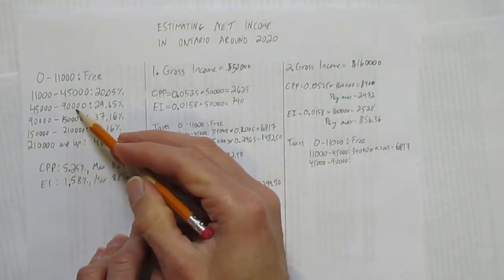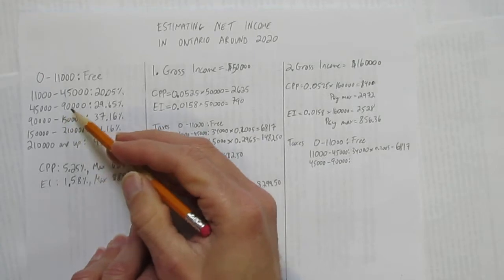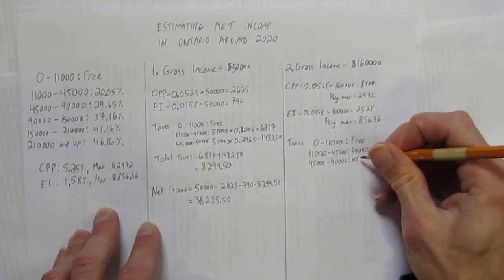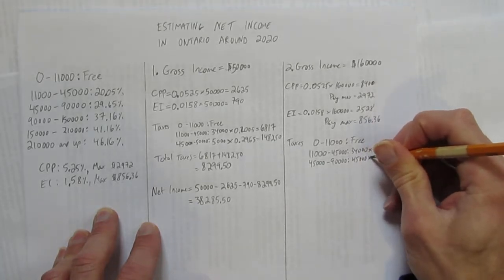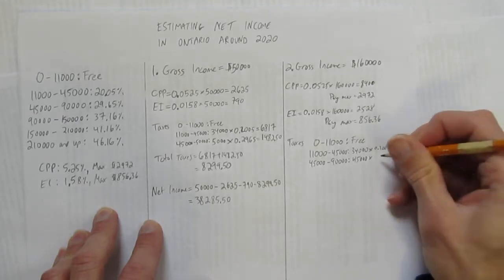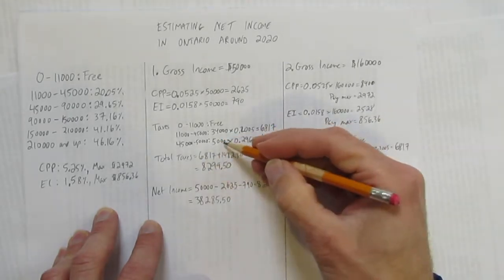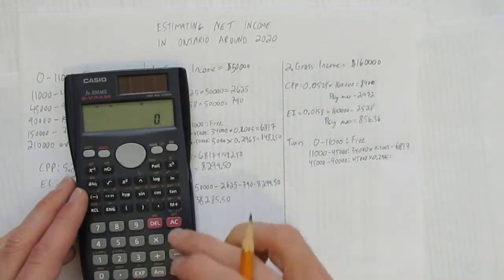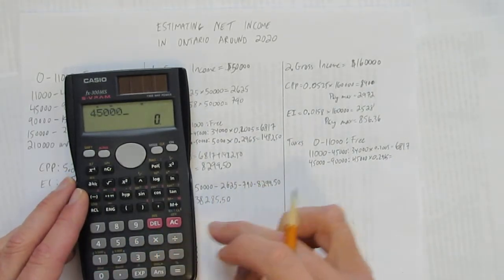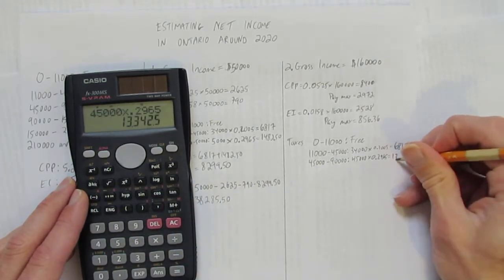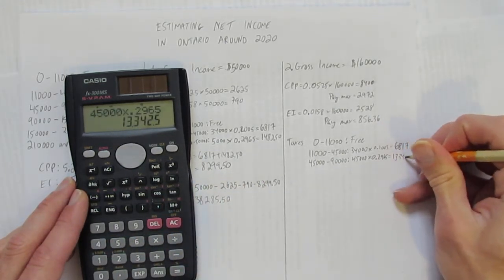From $45,000 to $90,000, how many dollars are in that section? $90,000 take away $45,000, $45,000. On that money, they have to pay 29.65%. Last time, we only had $5,000 in there. This time, you have $45,000 in there, times 0.2965, which equals $13,342.50.